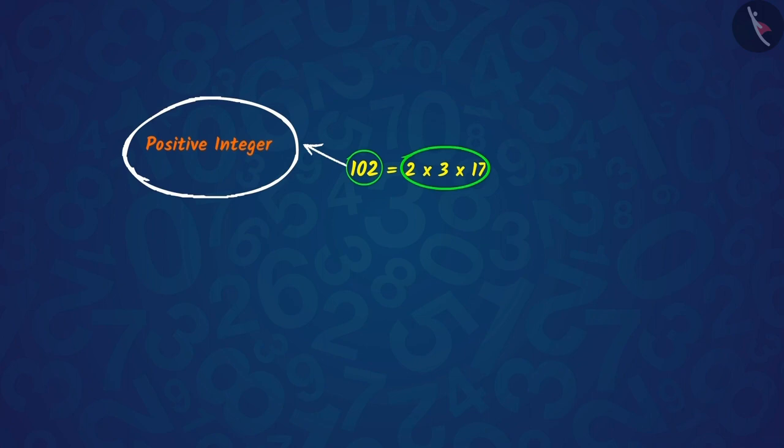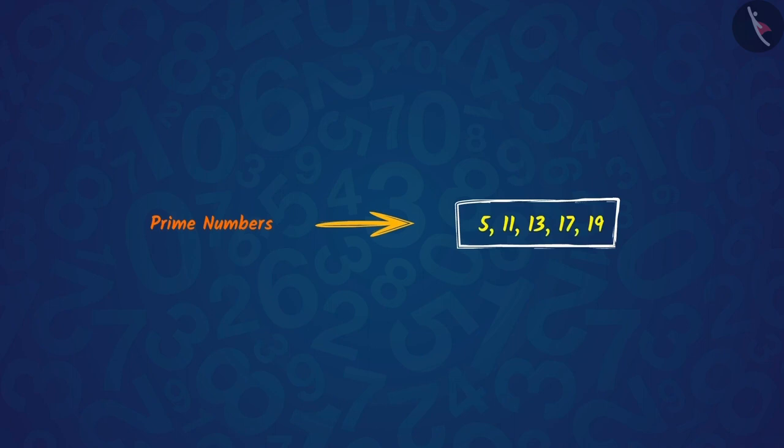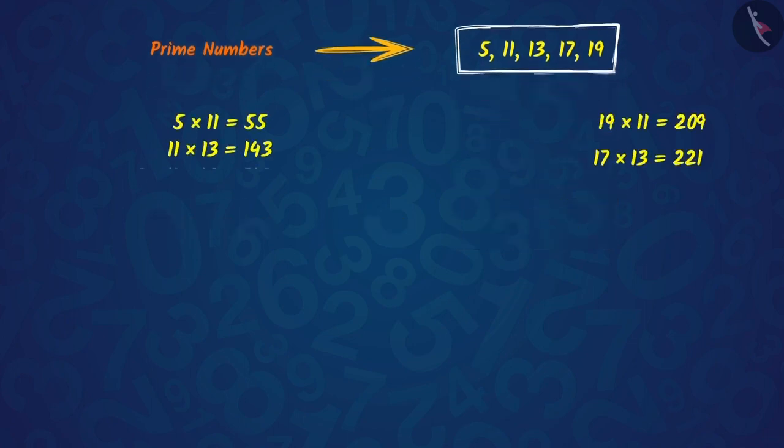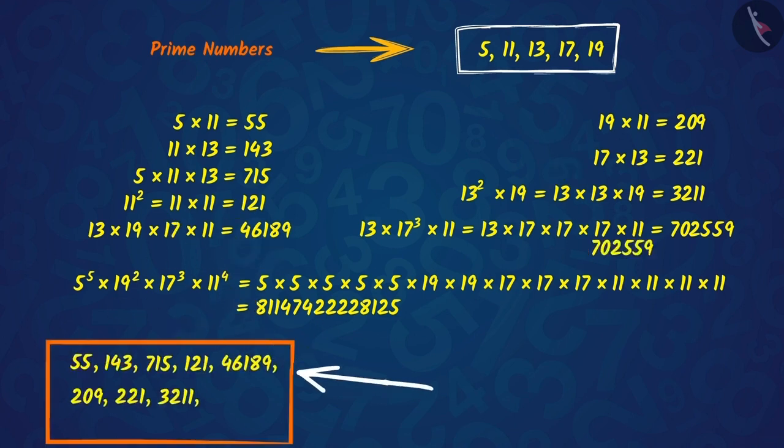Let us understand this in detail. If we take a group of prime numbers and multiply some or all these numbers any number of times, we will get a positive integer in each case.